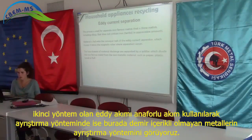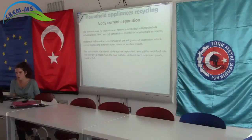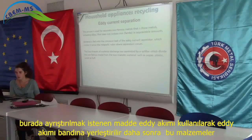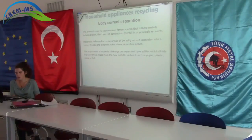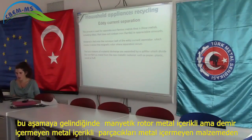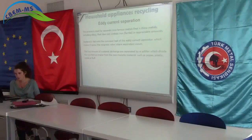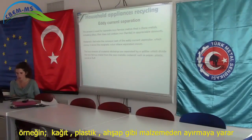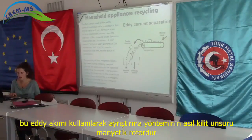Another process is the eddy current separation. This process is used to separate non-ferrous metals — that is, those metals, including alloys, that do not contain iron. Material is spread onto the conveyor belt of the eddy current separator, which moves across the magnetic rotor, while separation of the system of material and structure are separated by a filter, which divides the ferrous metals from the non-metallic materials, such as paper, plastic, and wood.